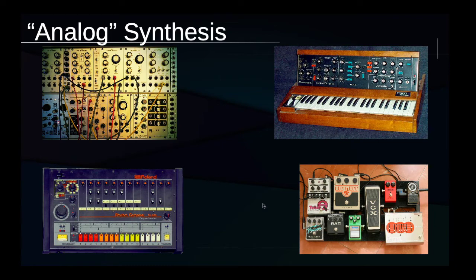Another form that analog synthesis takes — and here I'm straying off the beaten path into something very few people would call synthesis, although I think it's connected conceptually — is the practice that electric guitarists have of putting their signal through long chains of pedals. Somewhere the guitarist is playing their guitar, and there's a cable going from the guitar into one of these pedals, then from that pedal into the next one, and so on and so forth. At the end of this chain there's a cable that takes that very much altered sound signal and sends it to an amplifier or a recording interface.